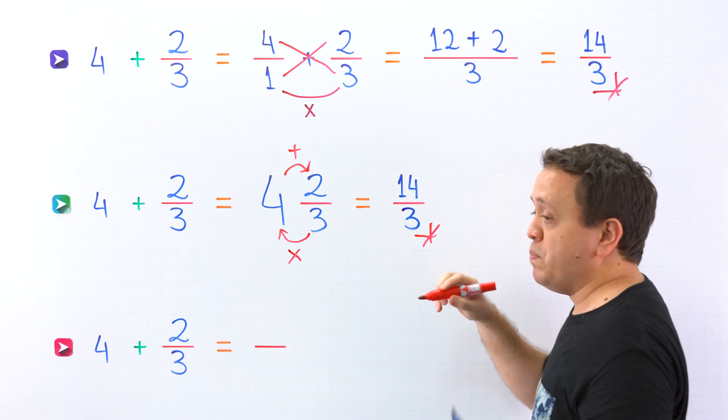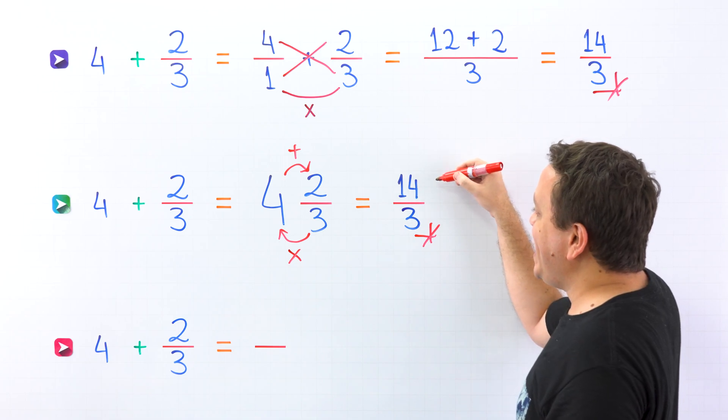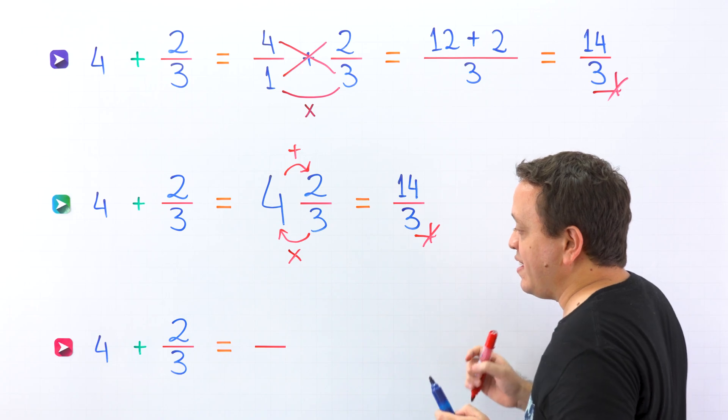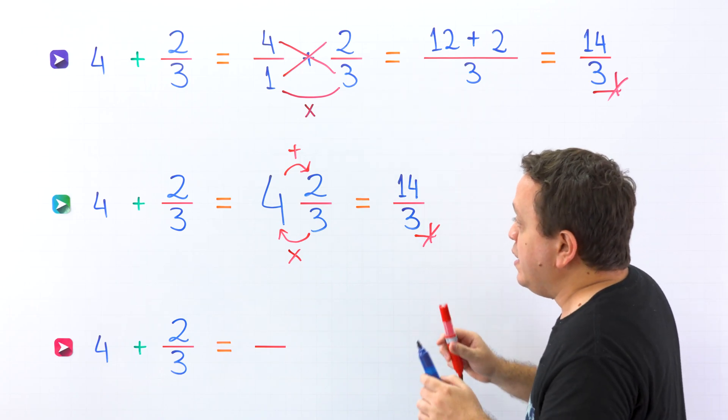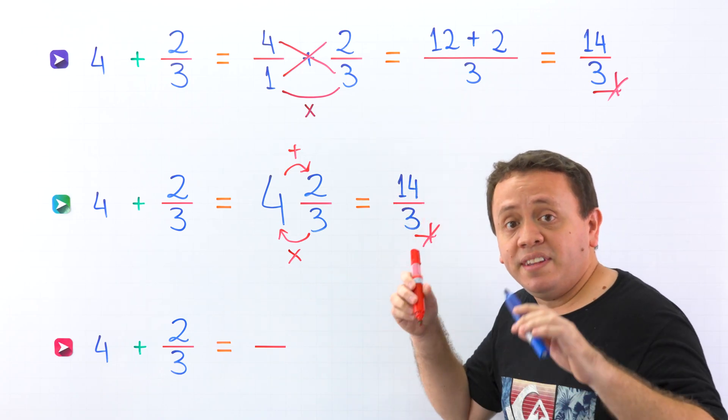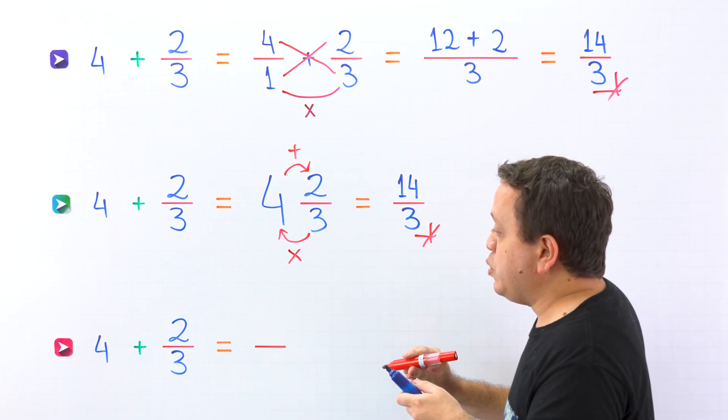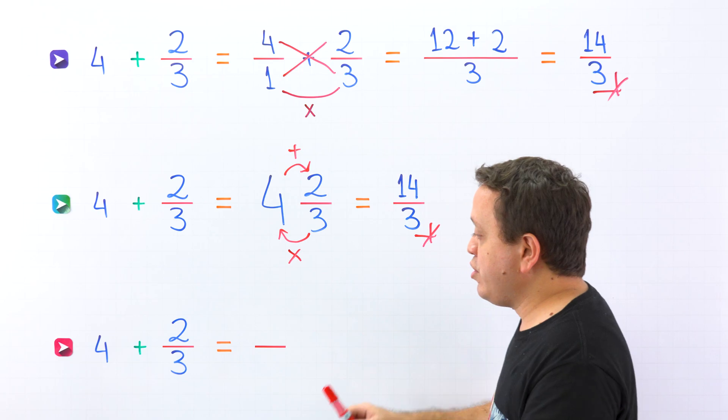14 thirds is an improper fraction, given that the numerator 14 is greater than the denominator 3. Let's finish with the last method. This is the fastest method. It's similar to the previous one, however, this time we will skip the mixed number step.